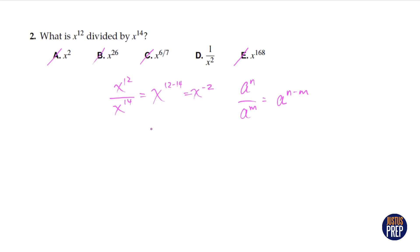But there's a rule for that. If you have a negative exponent, that just means it's one over the same base to the positive exponent. So x to the negative two is really one over x squared. So the answer here is d.